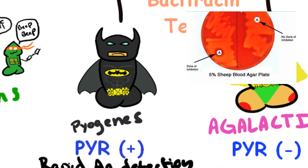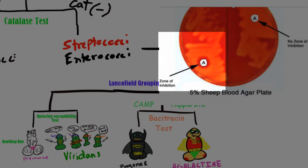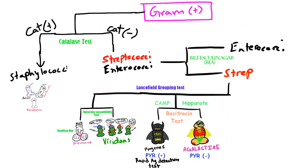In the case of Streptococcus pyogenes GAS, it's Bacitracin susceptible, as we can see from the picture. There is a zone of inhibition around the paper Bacitracin disc, showing it's being completely inhibited.